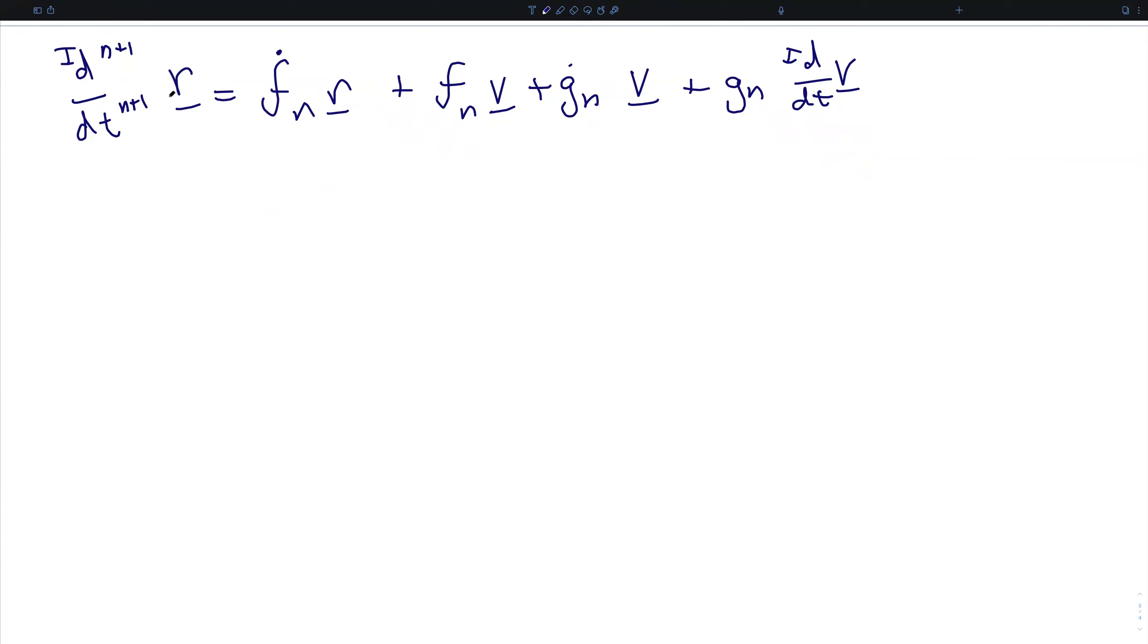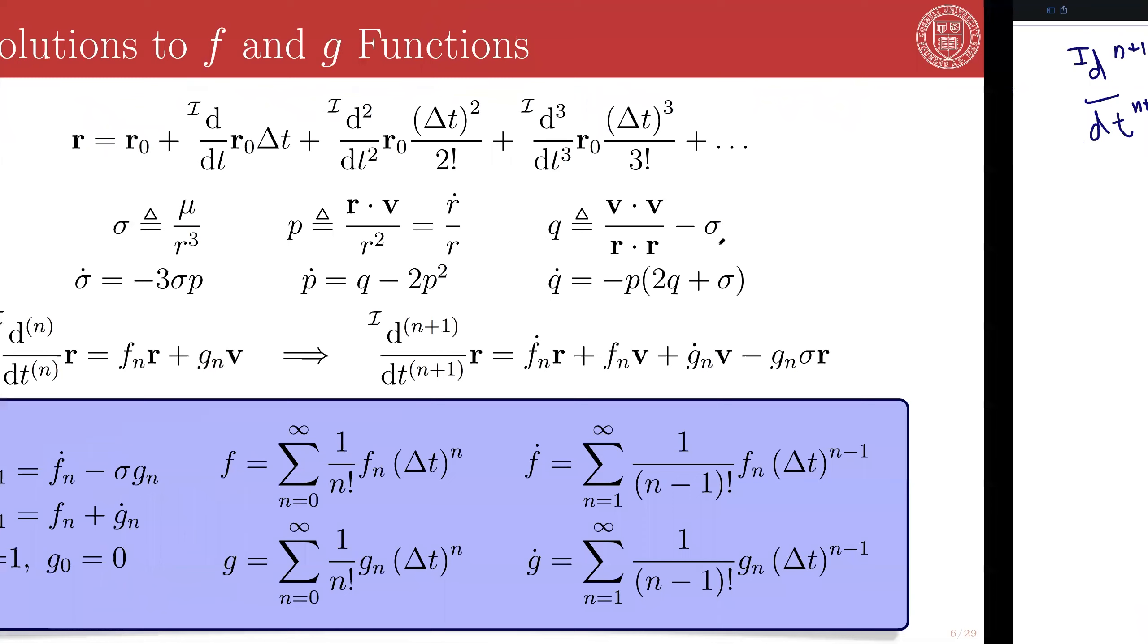So, if the nth order derivative of r was f sub n r plus g sub n v, applying the product rule, we get that the nth plus one order derivative is f dot sub n r plus f sub n v plus g dot sub n v plus g sub n times the inertial derivative of v. And this, by our previous definitions, is equivalent to negative sigma r. And so, if we package this together, we get which is the result shown here.